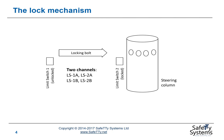Let's first look at the locking mechanism. Our locking mechanism involves putting a locking bolt into an appropriate hole in the steering column. We have four core components: the locking bolt itself, which can be moved into and out of the steering column; the steering column with holes into which the locking bolt can be inserted; and two limit switches — one triggered when the locking bolt is fully in place, and one triggered when the locking bolt is fully withdrawn.